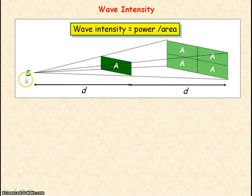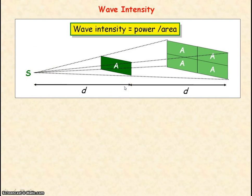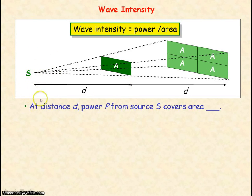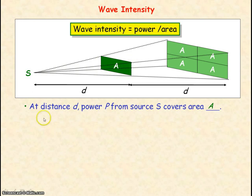If we consider S to be a point source of waves — that is, it's emitting waves in all directions in a 3D space — we're going to be considering the intensity of the wave at a distance d from the point source. We can say the intensity at distance d is equal to the power P divided by the area A.